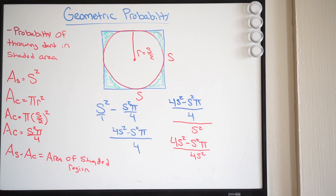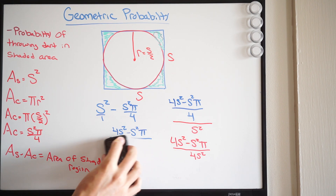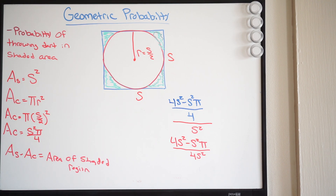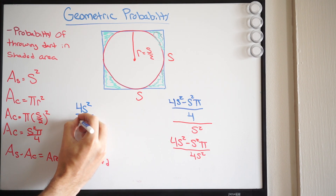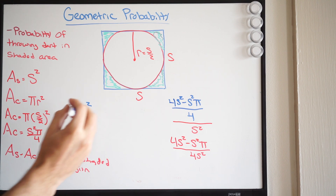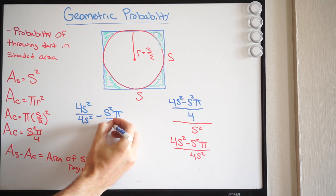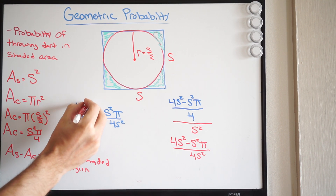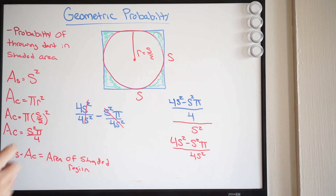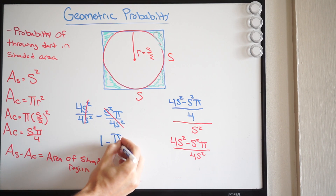At this point, since we have one denominator and two terms in the numerator, we can break this up. We can rewrite this as 4S squared over 4S squared, minus S squared pi over 4S squared. The S squared terms simply cancel in both fractions. We're left with 4 divided by 4, which is 1, minus pi over 4.